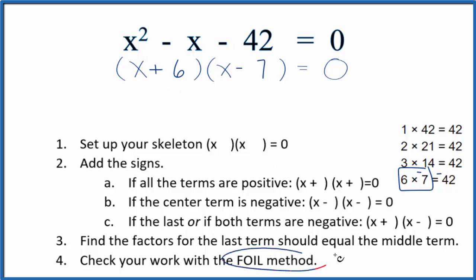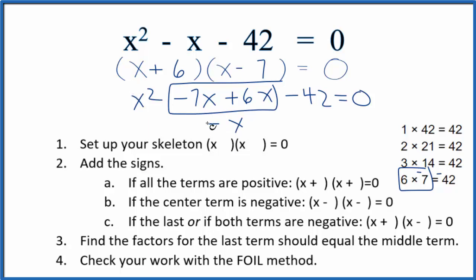First terms, then the outside -7x, inside +6x, and six times -7 for the last term equals zero. Let's add these together: -7x + 6x = -x, so x² - x - 42. We've done this correctly.